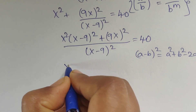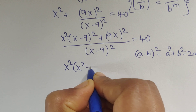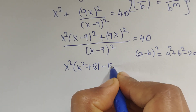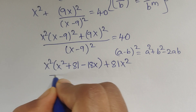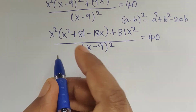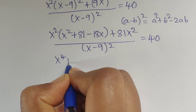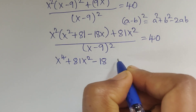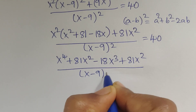Using this formula, we expand: x squared plus b squared — 9 squared which equals 81 — minus 18x, plus 9 squared which equals 81. So x squared times x squared divided by x minus 9 whole squared equals 40. Now multiply these two terms: x squared times x squared equals x to the power 4, plus 81x squared, minus 18x squared, divided by x minus 9 whole squared, equal to 40.